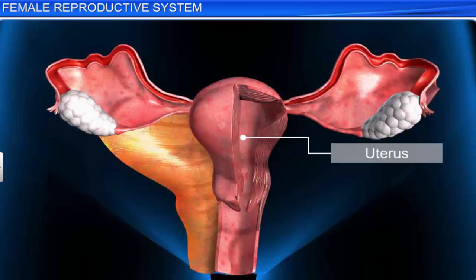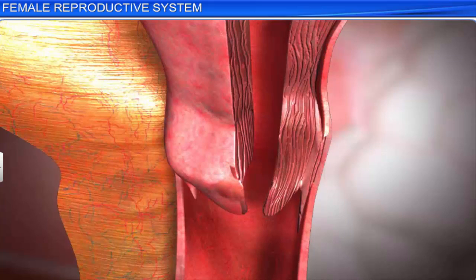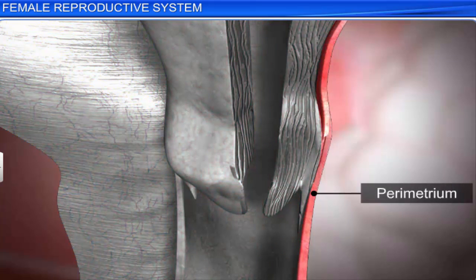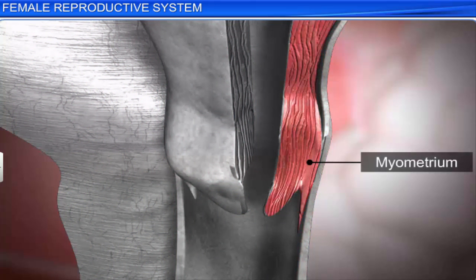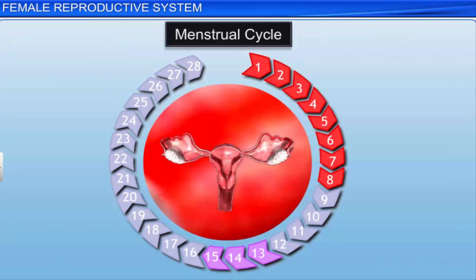The wall of the uterus is composed of three layers of tissues. The outer thin membranous layer is called the perimetrium. The middle thick layer of smooth muscle is called the myometrium, and it helps during delivery by producing strong contraction motions. The inner glandular layer is called the endometrium, and it undergoes cyclical changes during the menstrual cycle.